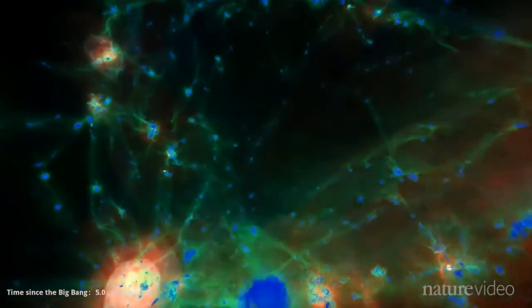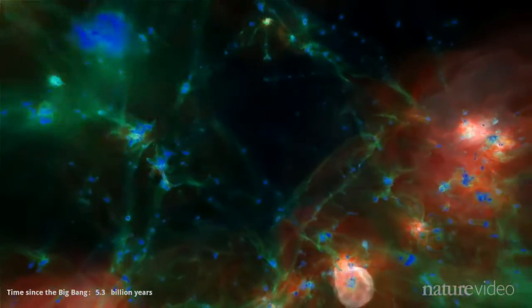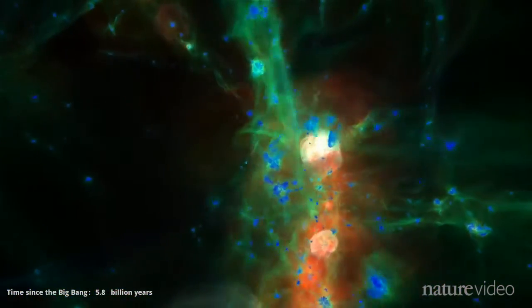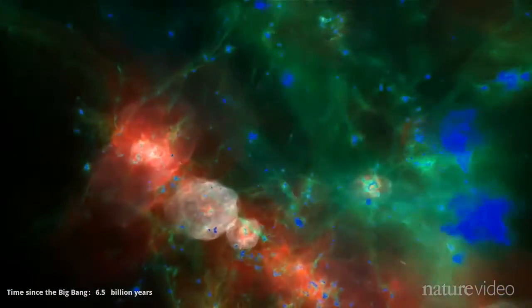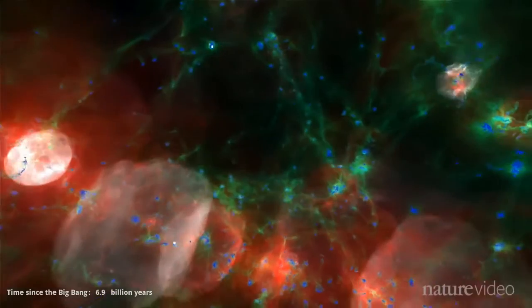Supermassive black holes grow at the centre of these. As they gobble up matter, they superheat the material around it, blowing out gas in these violent white bursts. Over time, this enriches the space between galaxies with warm but sparse gas.